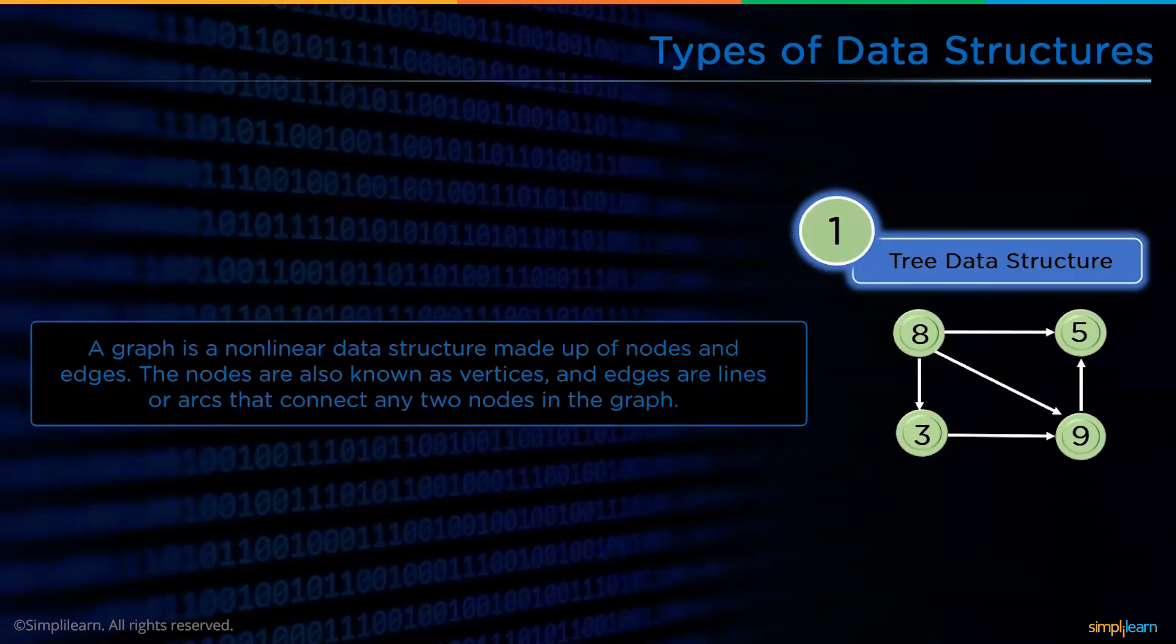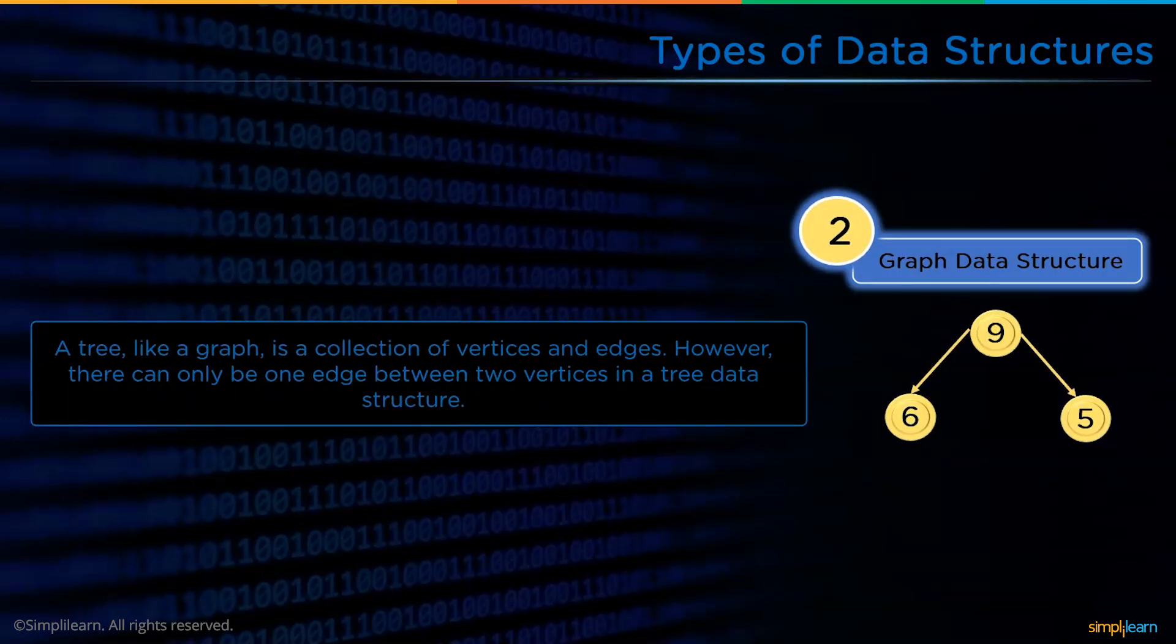The first one in non-linear data structures is the tree data structure. A tree data structure is built using nodes and edges. Each element in the tree data structure is called a node or vertex. Each vertex or node is connected to the other nodes or vertices using edges. The second one is the graph data structure, which is completely like a tree data structure.